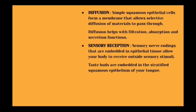Simple squamous epithelium cells are involved in diffusion, allowing selective materials to pass through, and assist in filtration, absorption, and secretion. For sensory reception, just as olfactory epithelium absorbs odor molecules, sensory nerve endings near epithelium tissue allow the body to receive outside sensory stimuli — for example, when skin epithelium contacts a hot plate, it sends a signal to remove the hand. Taste buds are also embedded in stratified squamous epithelium, helping you taste food.